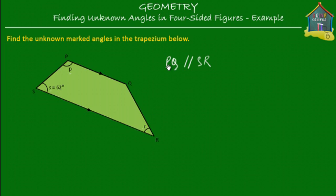Let's see. If PQ is parallel to SR, then angle P plus angle S must be equal to 180 degrees. We know that because the sum of angles between a pair of parallel lines is equal to 180 degrees. So angle P plus angle S is equal to 180 degrees.